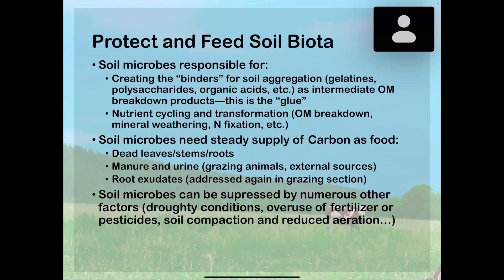Microbes break down organic matter, weather the minerals in the soil, and fix nitrogen from the atmosphere, providing it to plants. In order to thrive, they need a steady supply of carbon. They get that from cycling of plant materials at the surface of the soil, from roots as they grow and wane, from manure and urine from grazing animals or external sources we might apply, and from root exudates — sugars and other products produced by the plant that are pushed out into the rhizosphere. These are supplies of readily digestible carbon that help the microbial population thrive.